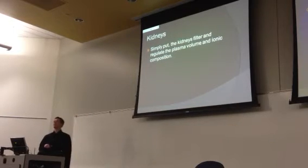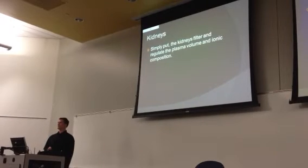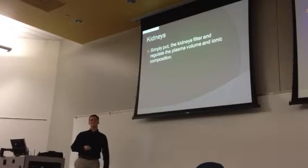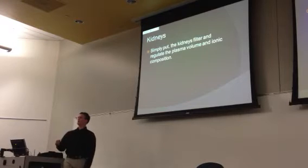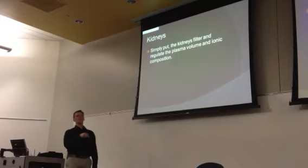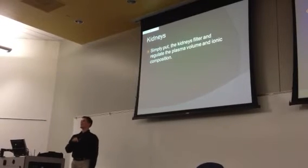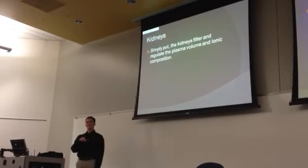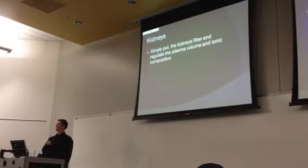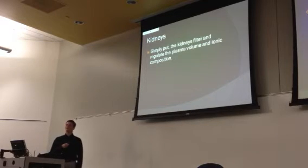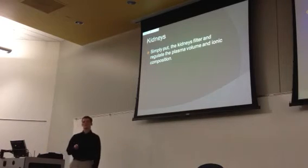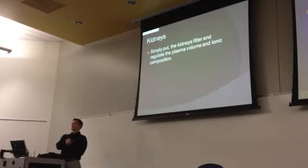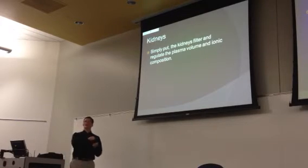Think about the plasma volume and cardiovascular volume. Here's your key link between the renal system and the cardiovascular system. By controlling the amount of plasma volume, you have a big effect on the cardiovascular system. If you increase blood volume, what happens to blood pressure? Long-term regulation of cardiovascular function is a lot done through the kidneys by controlling blood volume.